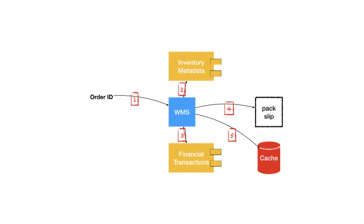The process by which this gets created has two parts. First, I'll talk about synchronous services and how we test those using contract-based testing. Then we'll see how that applies to messaging, because messaging is more involved in this. An order ID comes into our warehouse management system. To generate a pack slip, it contacts the inventory metadata system for item description and price, and the financial transaction service for charging and discount logic — because we don't want the warehouse management system to know how to do discounts.